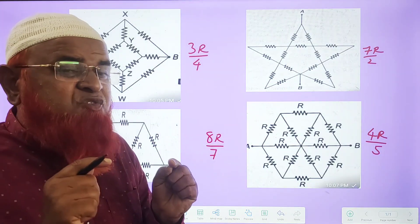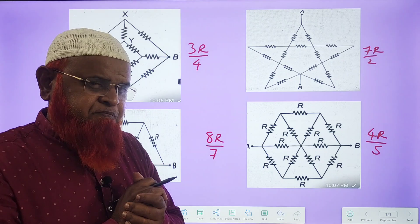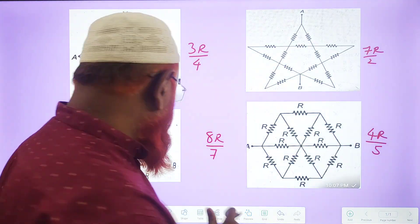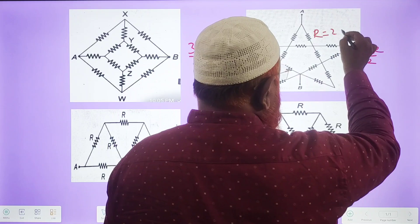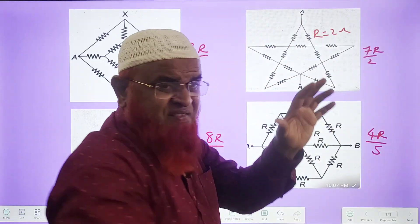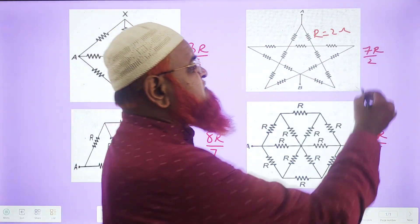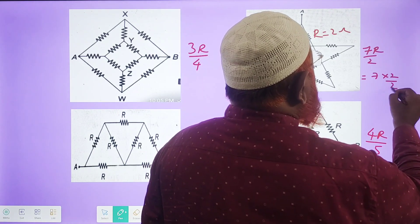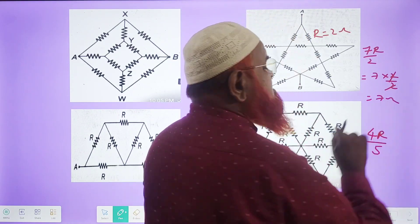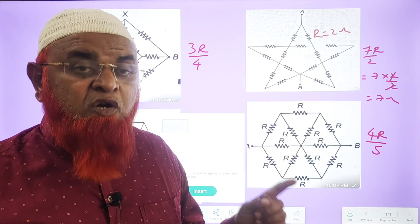If you remember these formulas, what is the benefit? The benefit is, for example, if this resistance is taken as 2 ohms, if all the resistors in this circuit is taken as 2 ohms, then the simple thing you have to do is 7 into 2 by 2. The 2s get cancelled, your answer is 7 ohms. It is ready. You can do this in 5 seconds.